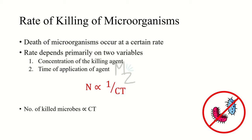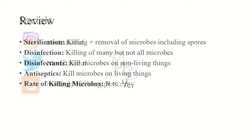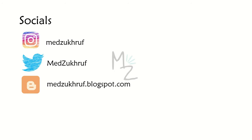Quick review: Sterilization is the killing or removal of all microbes including spores. Disinfection is the killing of many but not all microbes. Disinfectants kill microbes on non-living things like a table; antiseptics kill microbes on living things like skin. The rate of killing is expressed as N inversely proportional to 1/CT, where N is the number of surviving organisms, C is the concentration of the killing agent, T is the time of application, and CT is the dose.